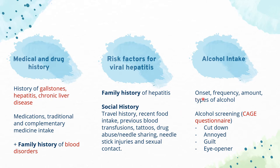Explore the onset of drinking, when they started, frequency, amount, how much they drink in a week, and types of alcohol they take. We can use the alcohol screening CAGE questionnaire, which consists of four questions: Have you ever felt that you should cut down on your drinking? Have other people ever annoyed you by commenting on your drinking? Have you ever felt guilty about the amount you drink? Have you ever had a drink in the morning to settle yourself?